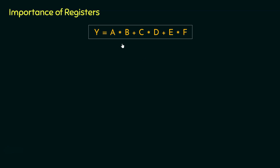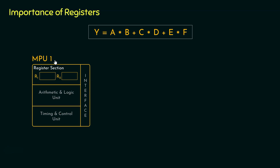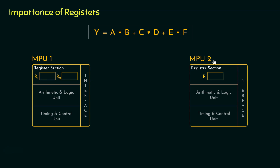Suppose we have to compute this particular expression. On the left-hand side we have Y, and we are going to assign to it A times B, plus C times D, plus E times F. Now say we have got two microprocessing units, MPU-1 and MPU-2. In the register section of MPU-1, we have got two different registers, R1 and R2. On the other hand, in the case of MPU-2, within the register section, we have got only a single register R.